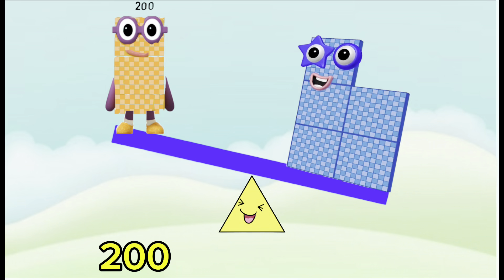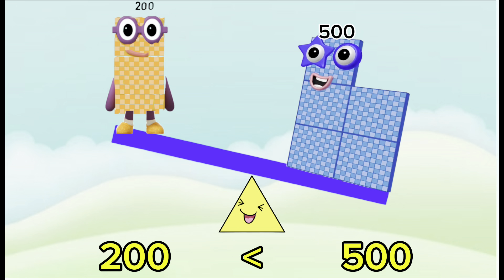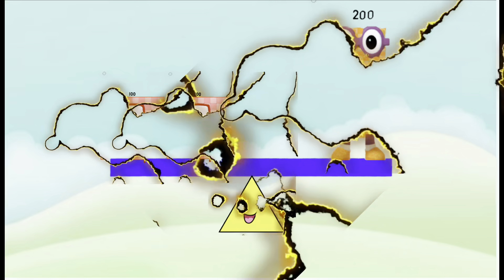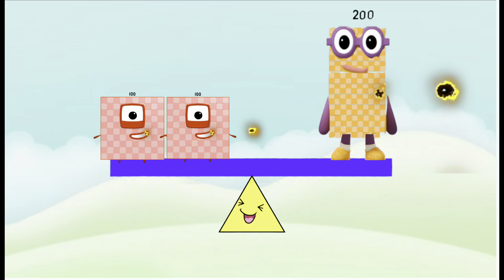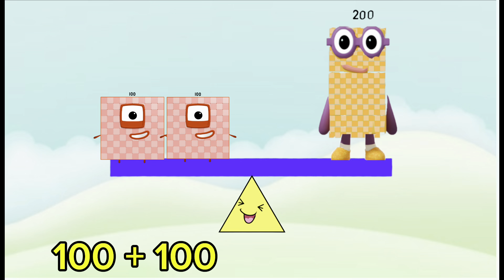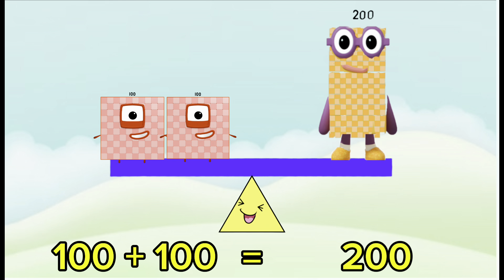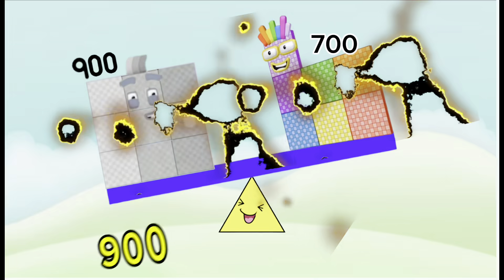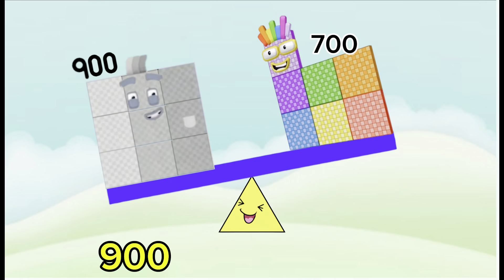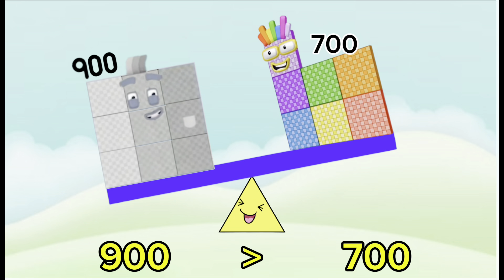Two hundred is less than five hundred. One hundred plus one hundred is equals to two hundred. Nine hundred is greater than seven hundred.